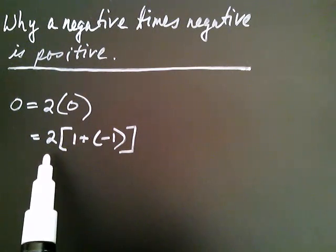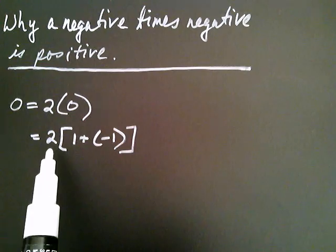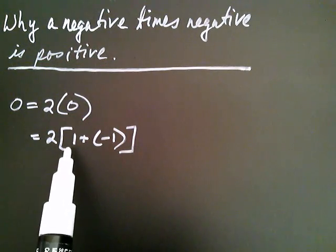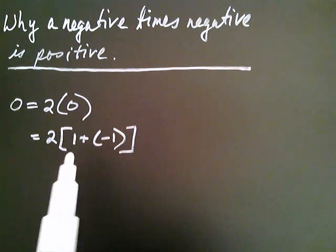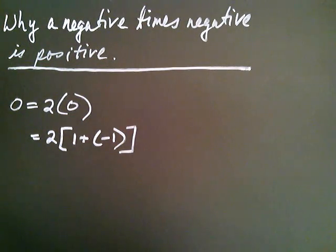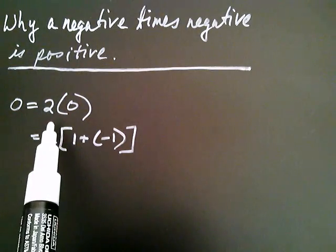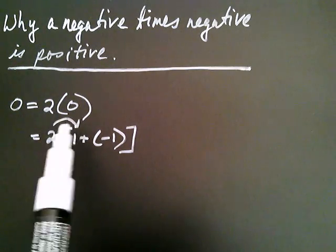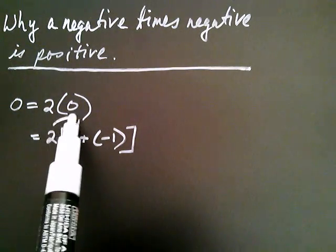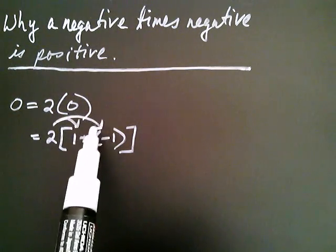For example, I can take two and multiply it by one, and then take two and multiply it by negative one. So: two times one, and then two times negative one.